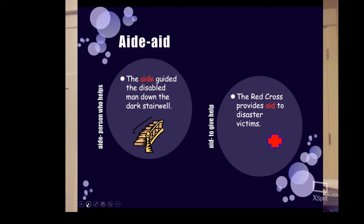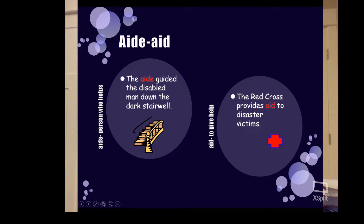Next, we have aide versus aid. An aide is a person who helps — 'The aide guided a disabled man down the dark stairwell.' Aid, without the E, means to give help — 'The Red Cross provides aid to disaster victims.' A way to remember: the aide is the person, the homie. Terrible joke, but I hope it helps you remember.